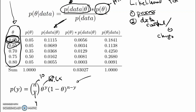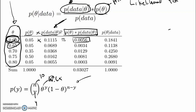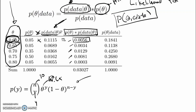The next step is to take each one of these priors and multiply it by the likelihood. When we multiply the probability of theta times the conditional probability of data given theta, that gives us the joint probability of theta and data. So each one of these values — obtained by multiplying the prior by the likelihood — is the joint probability of theta and the data. Then I add all five of these values together and I get 0.03027. That is the marginal probability of the data.